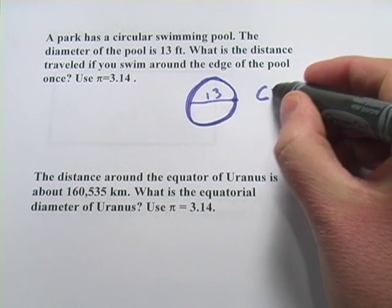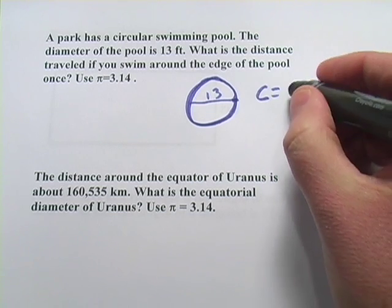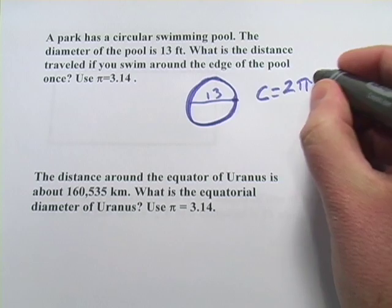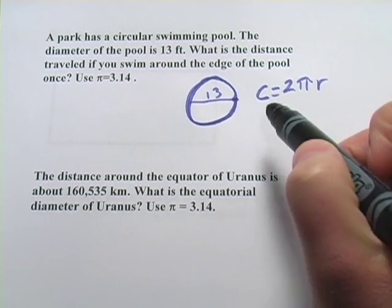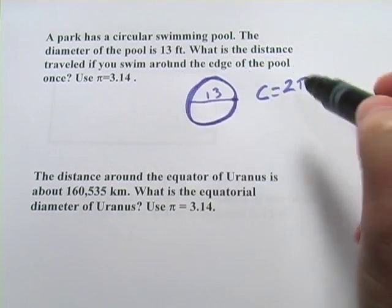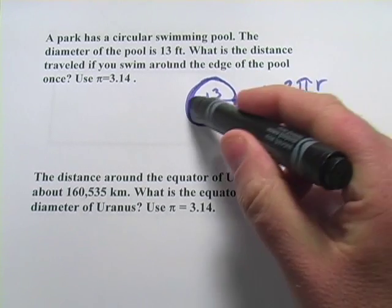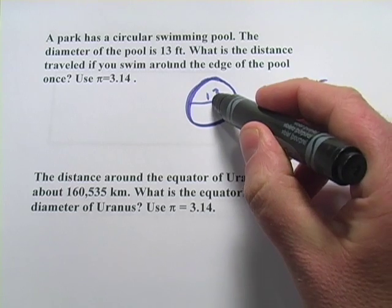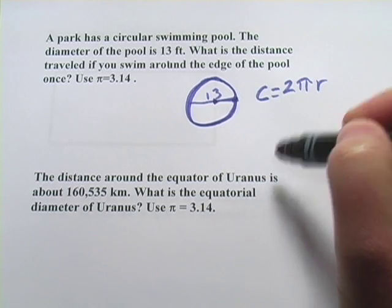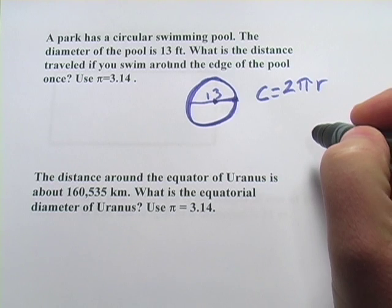We have a formula for that. We have C equals 2 times pi times the radius. Now, the mistake you might make because they've given you 13 feet is that you might try to plug in 13 for R. But 13 is not the radius, it's the diameter. The radius is going to be half of that because the radius goes from the center to the edge. So the radius is going to be 6.5.